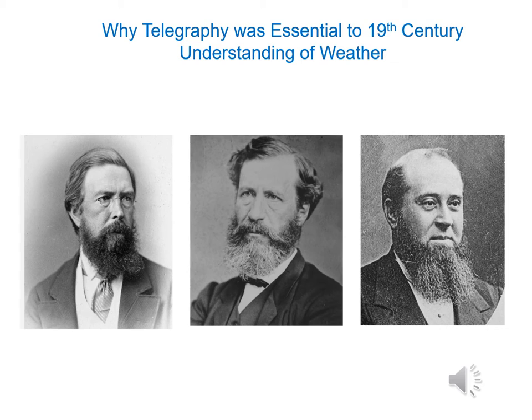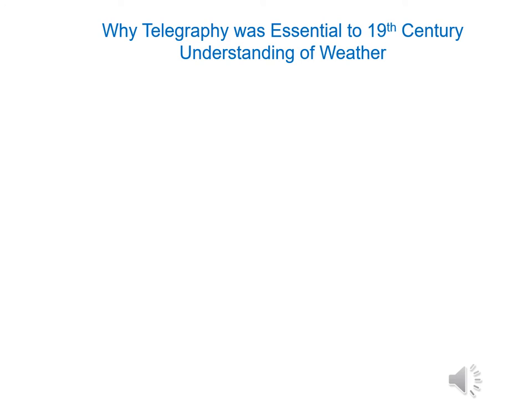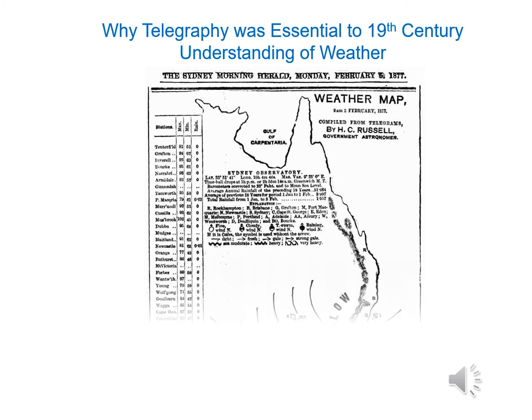Ellery was the first to experiment with synoptic maps in 1859, but he did so privately at his desk. Synoptic maps did not appear publicly until Russell's publication in the Sydney Morning Herald of February the 3rd, 1877. The vast scientific emptiness of the continent meant that the initial maps were highly regional and weren't very informative — this map can only show the weather for the southeast corner of the continent.